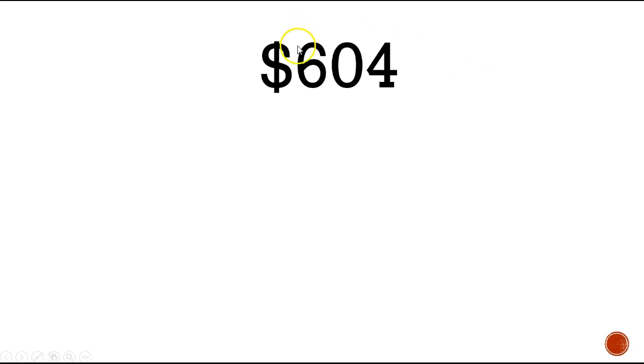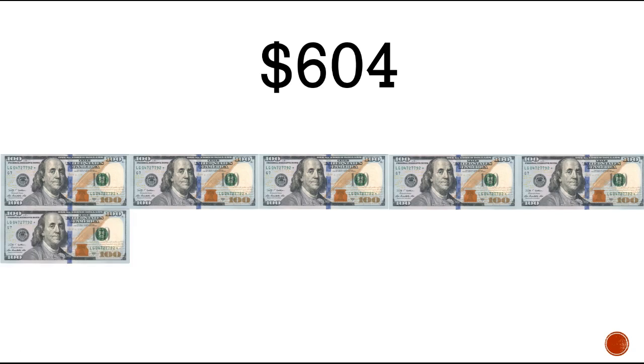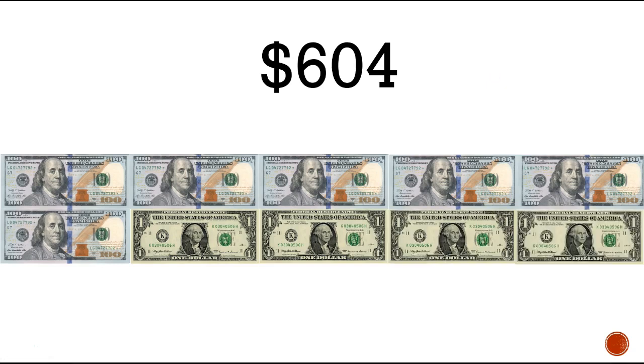You do this one on your own: make six hundred and four dollars using one-hundreds, tens, and one-dollar bills. Let's compare. I saw there are six hundreds, so I need six one-hundred-dollar bills: 1, 2, 3, 4, 5, 6. Then I saw I don't have any tens, so I don't need any ten-dollar bills. Then I need four one-dollar bills: 1, 2, 3, 4. There's my six hundred and four dollars!